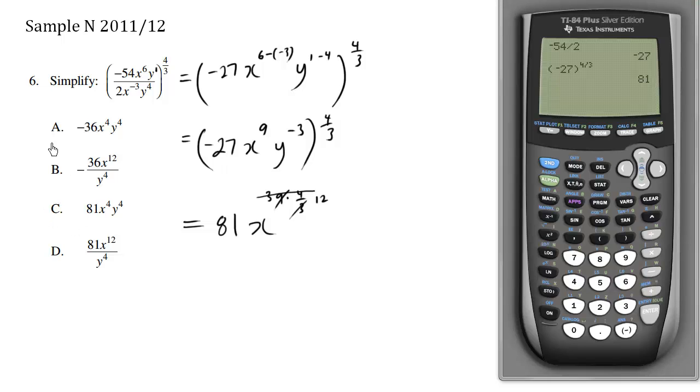And when we look at our answers, already we have the coefficient 81, it's only C or D, and x to the 12 is definitely going to be choice D. However, just for sanity's check, we're going to keep progressing here.